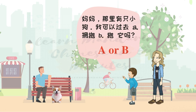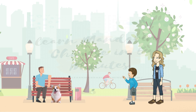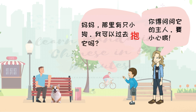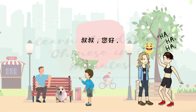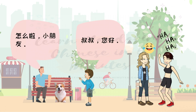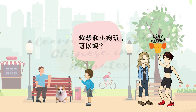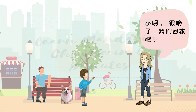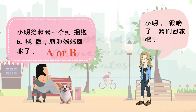妈妈，那里有只小狗。 我可以过去抱他吗？ 你得问问他的主人，要小心哦。 叔叔，你好。 怎么了，小朋友？ 我想和小狗玩，可以吗？ 嗯，他叫小王，很乖的。 小明，很晚了，我们回家吧。 好的。 小明给叔叔一个拥抱后就和妈妈回家了。